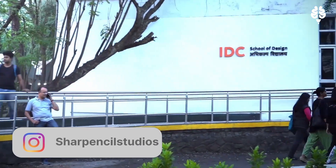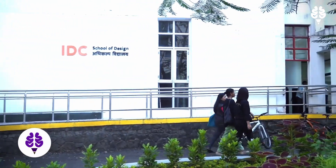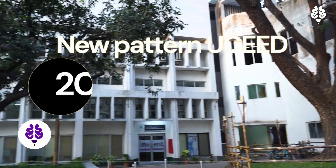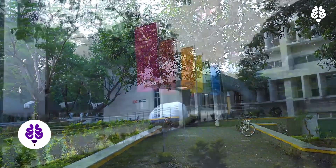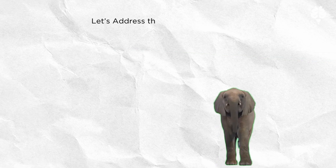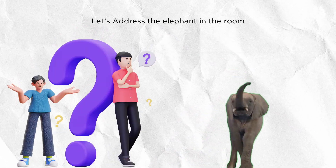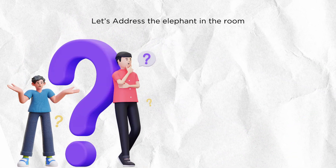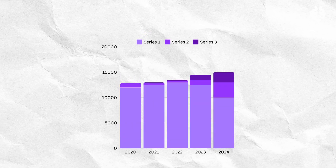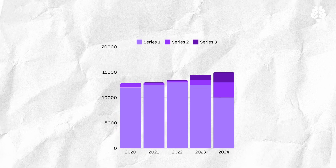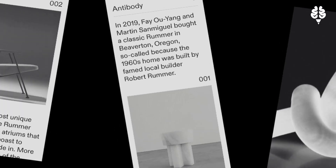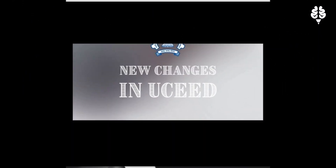Now let's talk about the recent changes in the UCEED exam pattern. The exam pattern underwent a significant overhaul aiming to better assess the candidate's aptitude for design and creativity. So what's new? Let's address the elephant in the room — why is IIT changing the pattern? Isn't the paper tough enough already? Look at the given graph. The number of applicants in UCEED are increasing tremendously. That's the reason why the exam is becoming more challenging.